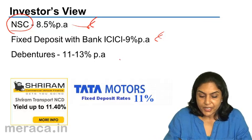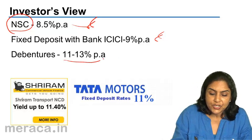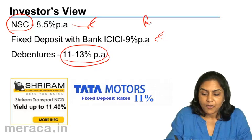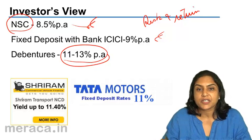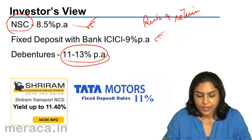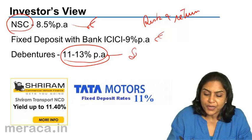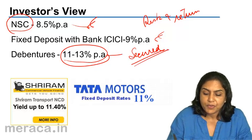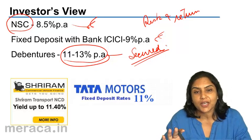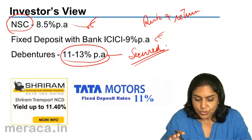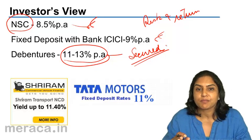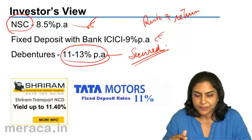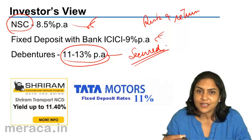The third option is debentures. In debentures, the return would be higher, but it would be a little more risky than perhaps the National Savings Certificate or a fixed deposit with a bank. Debentures are usually secured debentures, which means they are secured with a charge on the assets of the company. So usually debentures are considered not very risky, or not as risky as maybe investing in shares of a company. Therefore, in all three, there is a risk and return trade-off.